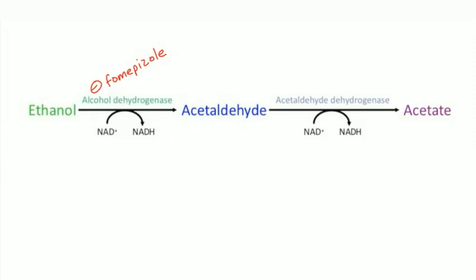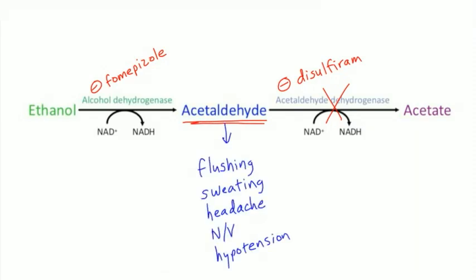The second enzyme, acetaldehyde dehydrogenase, is inhibited by disulfiram, used to discourage alcoholics from drinking. If an alcoholic in recovery takes disulfiram and relapses, acetaldehyde builds up in the body, causing flushing, sweating, headache, nausea and vomiting, and hypotension. These patients learn not to drink because they know it will make them very sick.